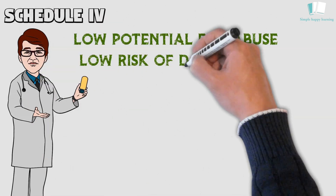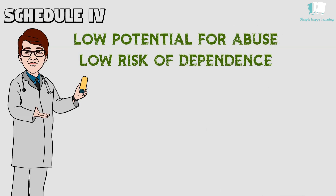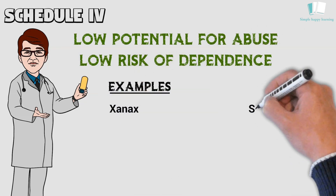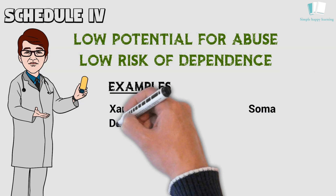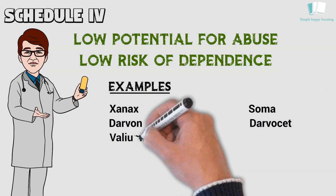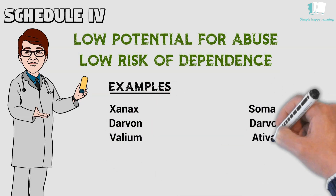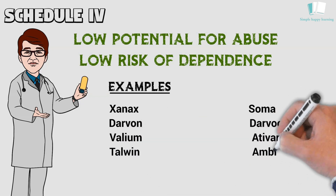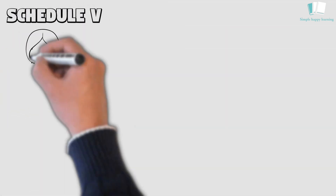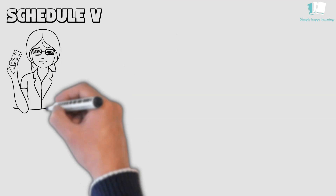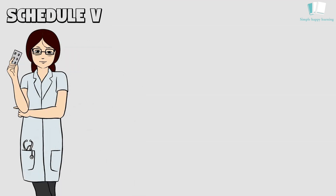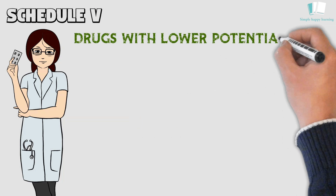Schedule 4: Schedule 4 drugs, substances, or chemicals are defined as drugs with a low potential for abuse and low risk of dependence. Some examples of Schedule 4 drugs are Xanax, Soma, Darvon, Darvocet, Valium, Ativan, Talwin, Ambien, and tramadol.